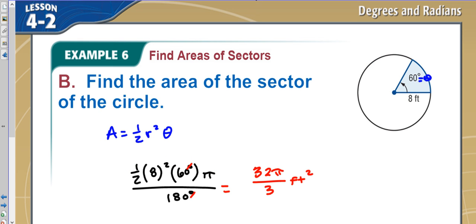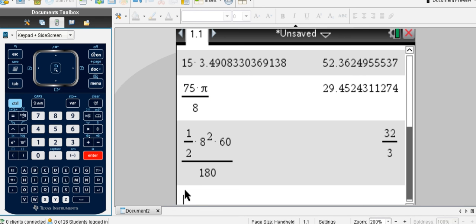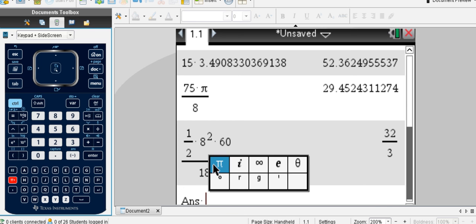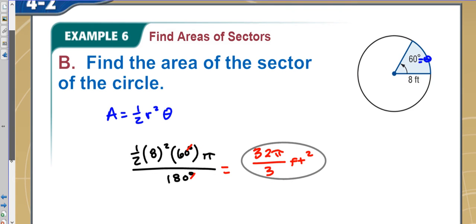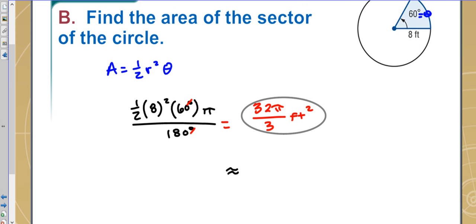Okay, so here's an answer that we left in terms of pi, and now if I wanted to get this as a fraction, I mean as a decimal, I would take my answer here and multiply by pi, and it says it is 33.5 when I round, 33.5 feet squared. And this would be my answer if I needed it as a decimal.